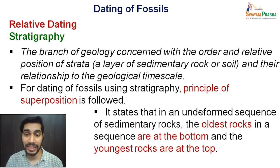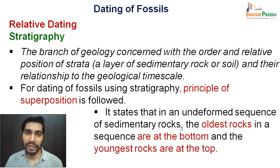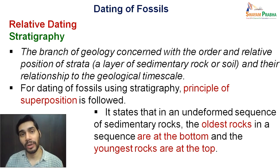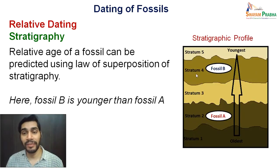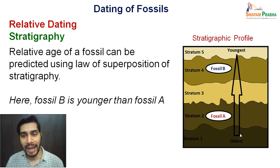The principle of superposition states that in an undeformed sequence of sedimentary rocks, the oldest rocks are at the bottom and the youngest are at the top. Simply put, if there are different layers of sediments in a rock, the one at the base is the oldest and the newer strata come above it. According to this principle, stratum 1 is the oldest and it progresses to the youngest at stratum 5.